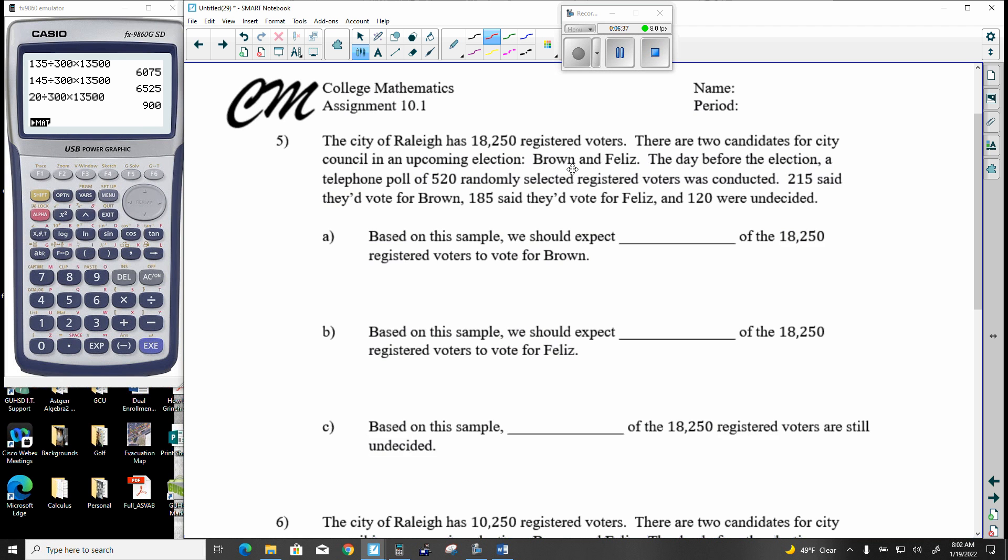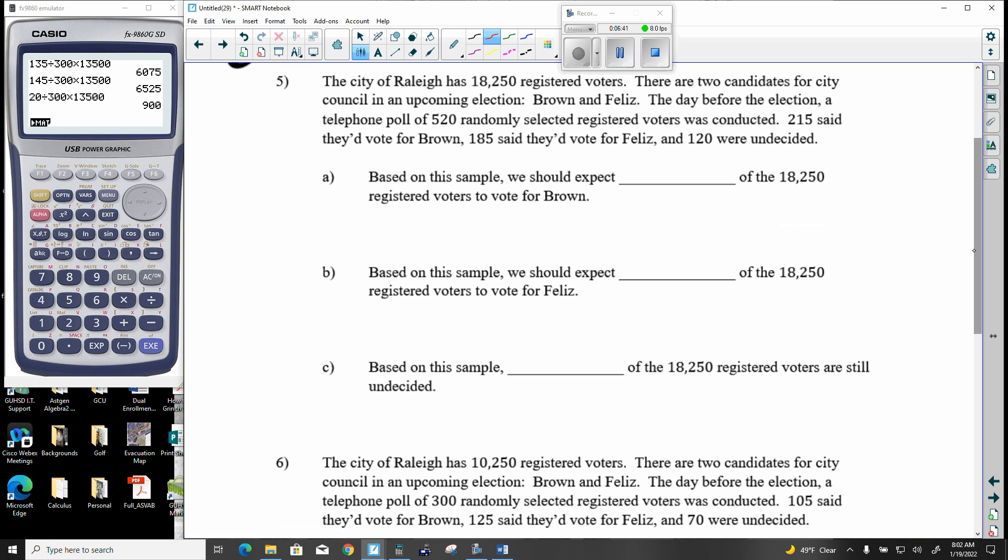City of Raleigh has 18,250. Let's go ahead and see how our election is going on this one. So on this election, 215 said they'd vote for Brown, 185 and 120. It does come out to be 520. Again, double check that so you don't accidentally use an incorrect number. So just add it up and then go ahead to work with your numbers here.